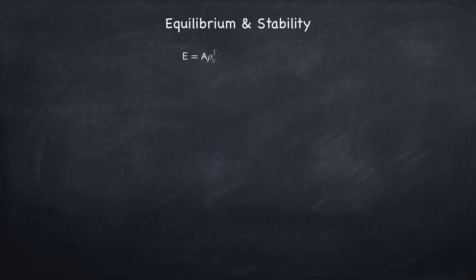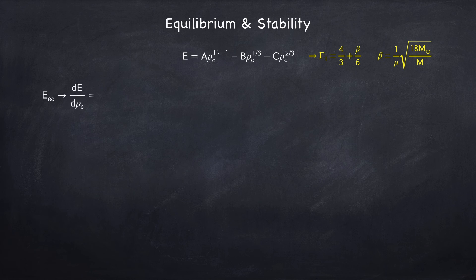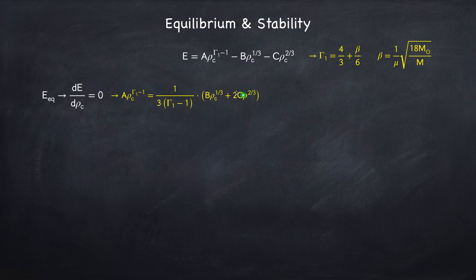Now we have to find the criteria for equilibrium and stability. And recall that we know what gamma1 is in terms of beta, and we know what beta is in terms of the mass of the star. The equilibrium energy will be found by minimizing the energy with respect to the central density, as that's the only thing that can vary here, and that is found by setting its derivative equal to zero. I'll spare you the algebra, but this gives the following condition for the internal energy. So now I can plug this equation into my term for the internal energy to get an expression for the equilibrium energy.